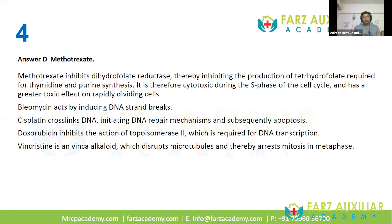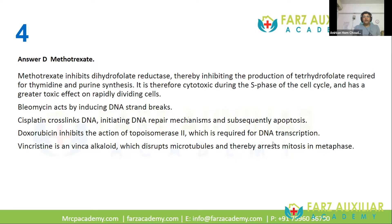Doxorubicin inhibits the action of topoisomerase 2, which is required for DNA transcription, and has mainly been associated with cardiac toxicities. Vincristine is a vinca alkaloid which disrupts microtubules and arrests mitosis in the metaphase, associated with neurotoxicity. If you note the various actions based on the phase of cell division, it becomes easy to understand which agent would affect which step, because purine synthesis follows the tetrahydrofolate pathway. This can be a template question from which many other questions might be framed.